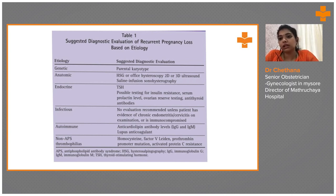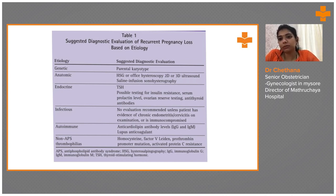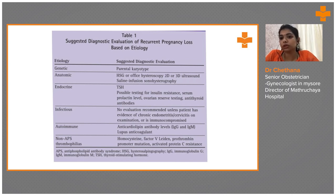For infectious etiology, we should rule out other causes first, then come to infectious etiologies. If there is any evidence of chronic endometritis like PID or continuous white discharge, we have to take a history and do an endometrial biopsy and send it for culture. Autoimmune diseases: anti-cardiolipin antibodies IgG and IgM, and lupus anticoagulant should all be tested. We should also test for thrombophilias: homocysteine, factor V Leiden, prothrombin promoter mutation, and activated protein C resistance. All these investigations should be evaluated in recurrent pregnancy loss patients.